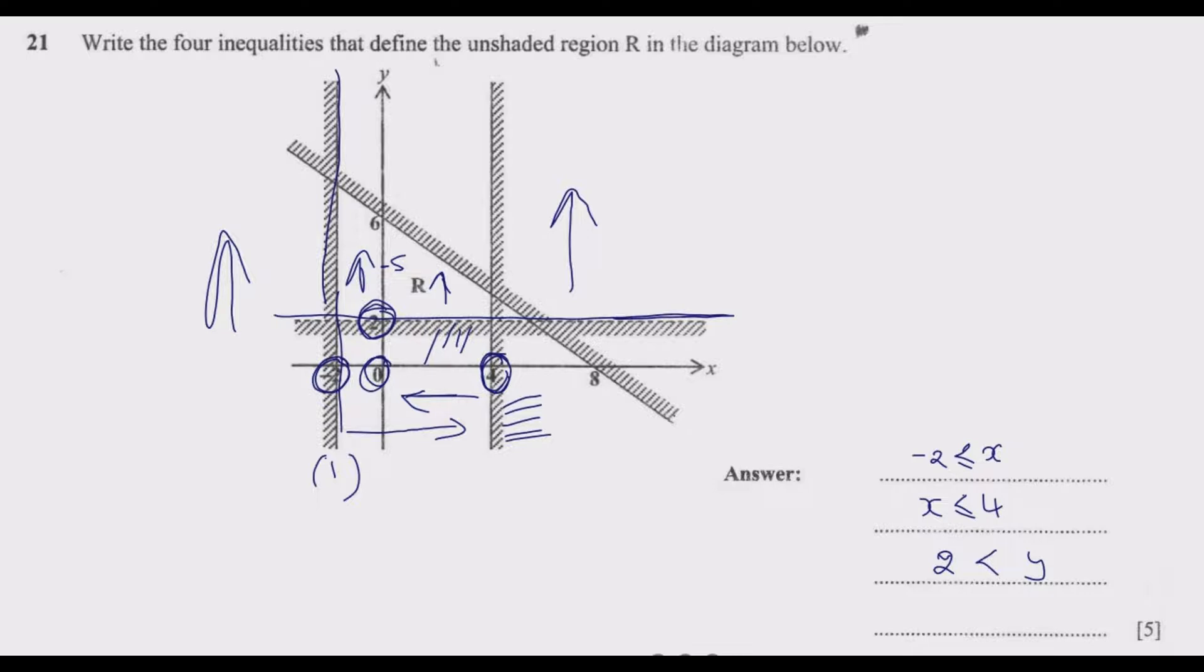Let us find the fourth one. The fourth one is this one which is moving along this line. It's passing at this point which is along the X axis, so it's 8, 0 because when moving along the X axis the value of Y is always 0. Then also here which is 0, 6 because we're moving along the Y axis. When moving along the Y axis, the value of X remains 0.